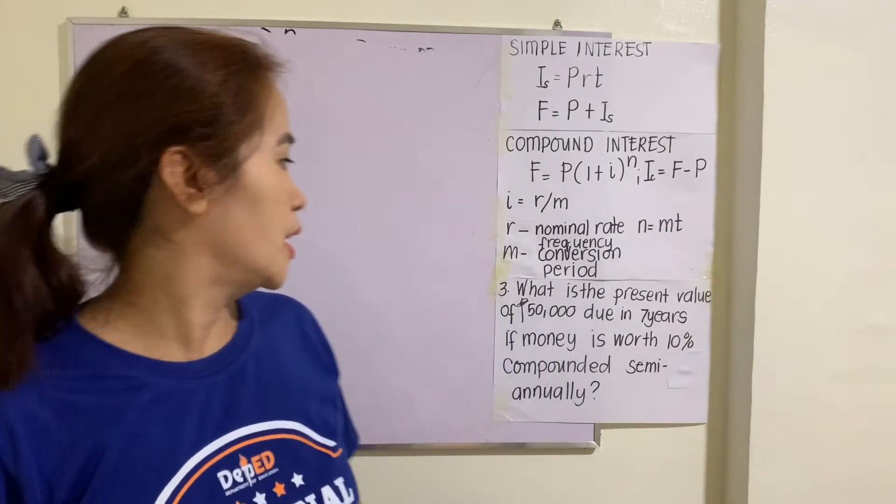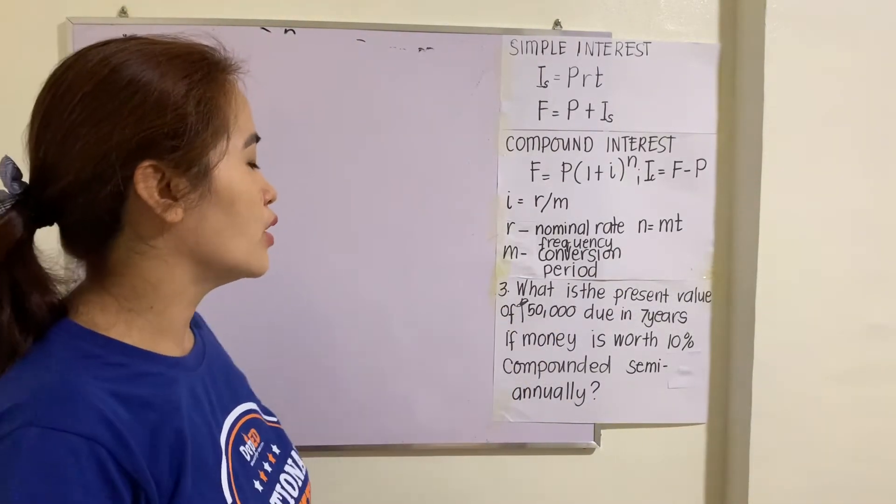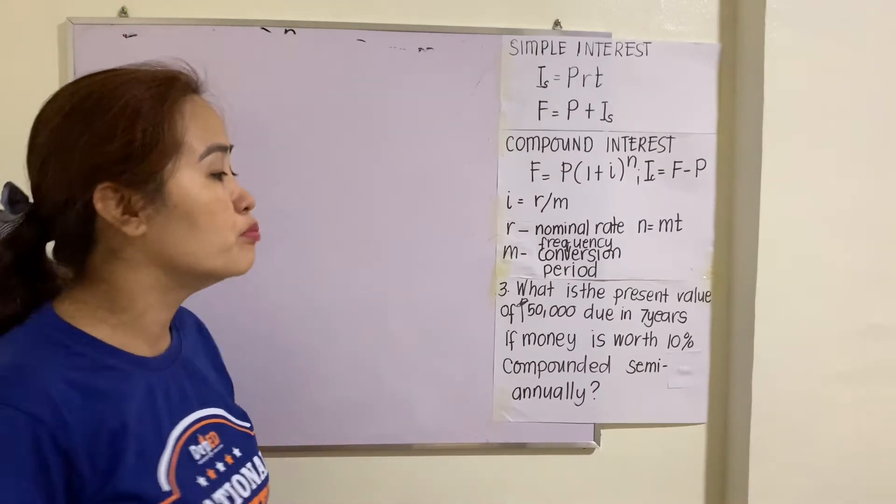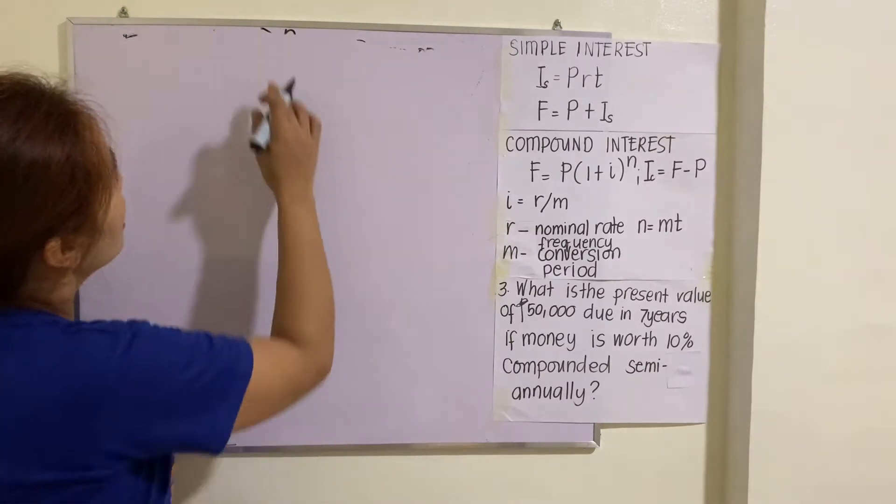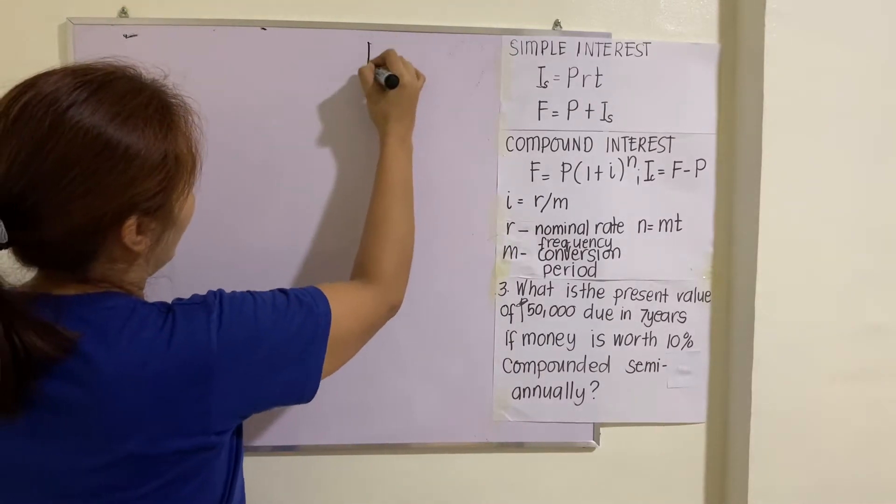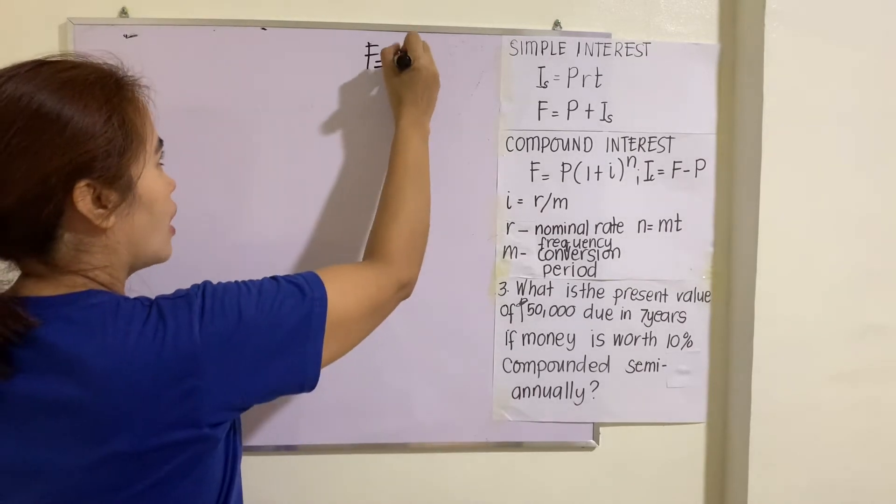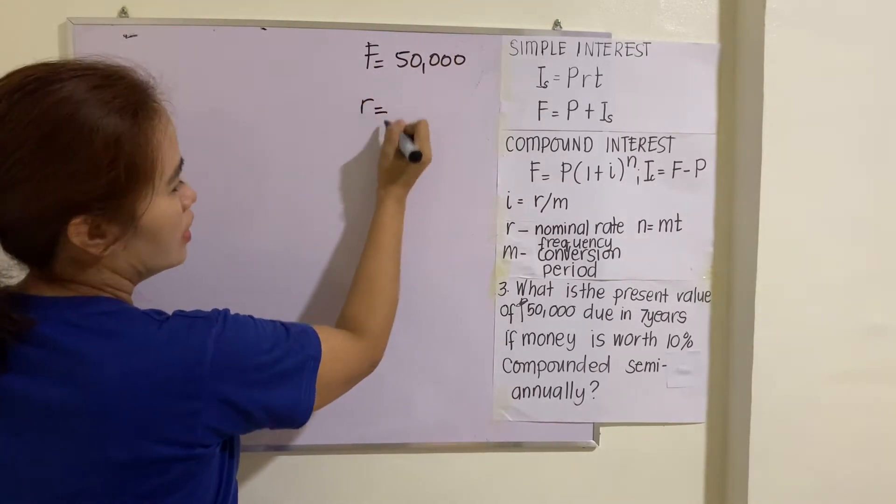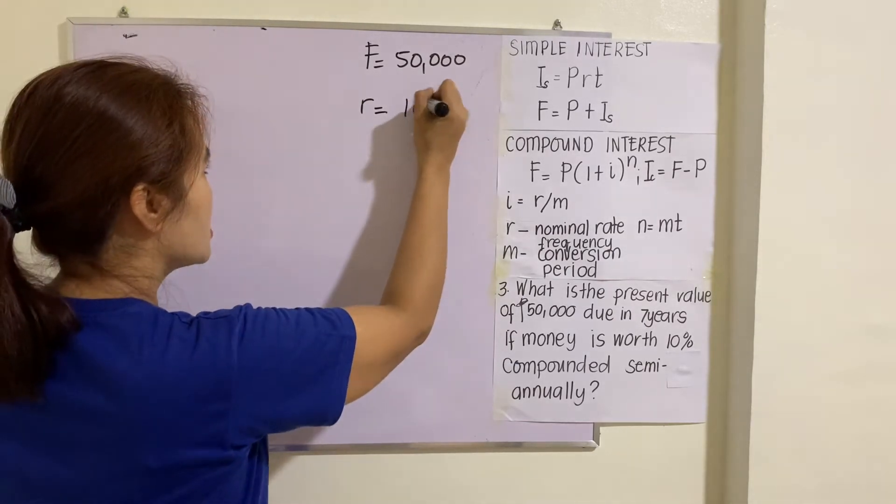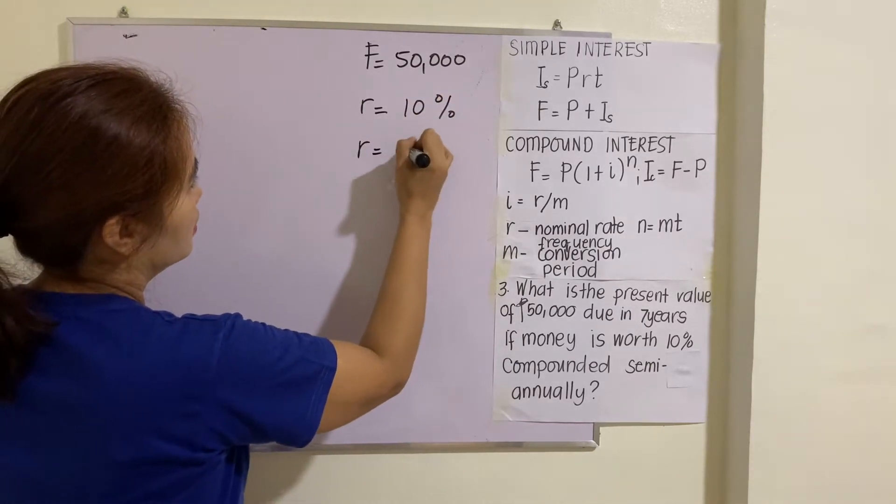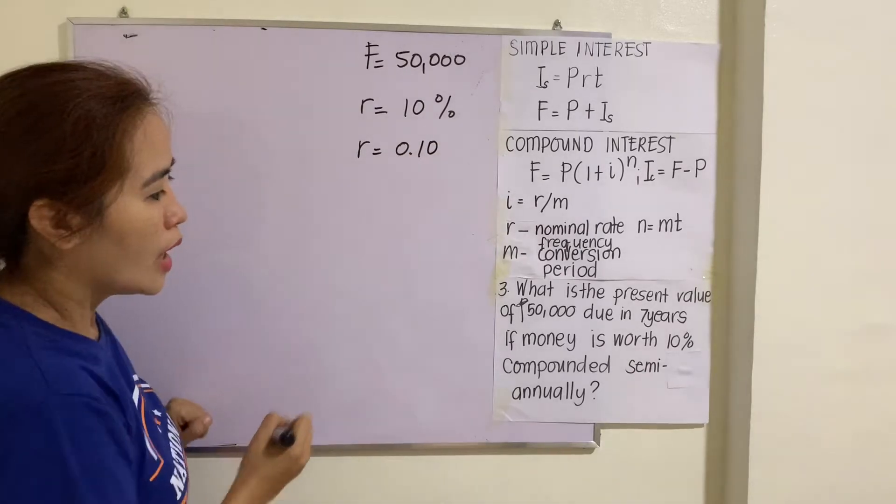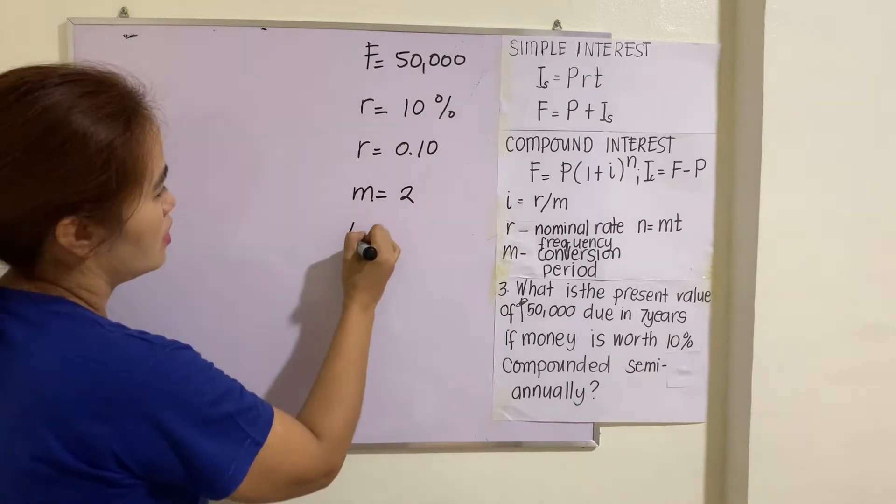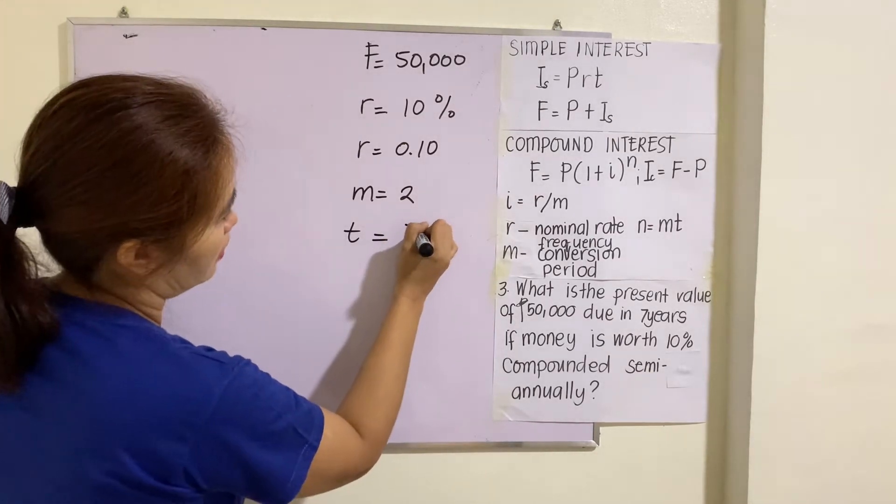Number 3: What is the present value of $50,000 due in 7 years if money is worth 10% compounded semi-annually? Let's identify the given. F = $50,000, R = 10% = 0.10, M = 2 semi-annually, T = 7 years.